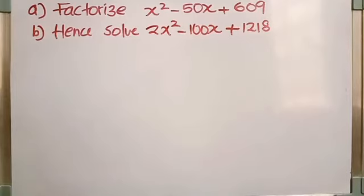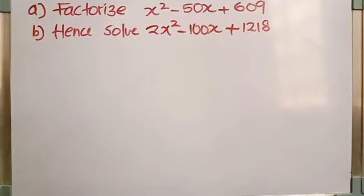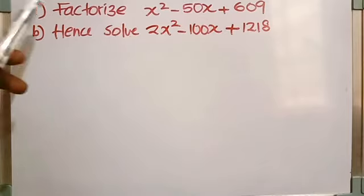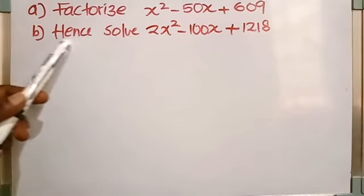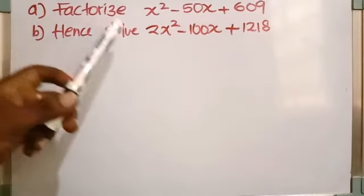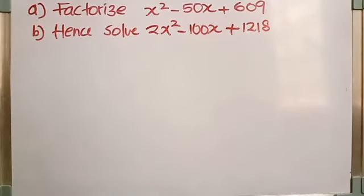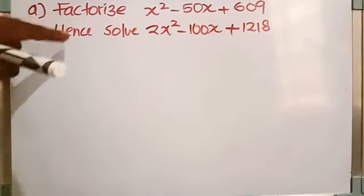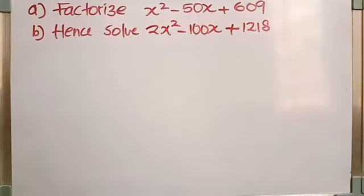Now let's go through a past paper question. Question A is: Factorize x squared minus 50x plus 609. And B is: Hence, solve 2x squared minus 100x plus 1218 equals 0. You may find questions with 'hence.' Question B starts with 'hence solve,' which means based on the first result, we have to solve the second one. So let's solve part A first.